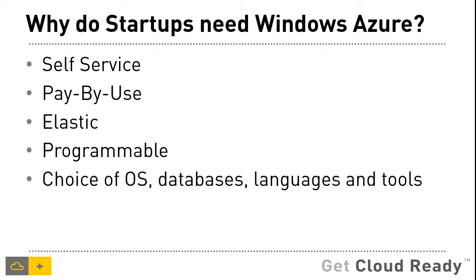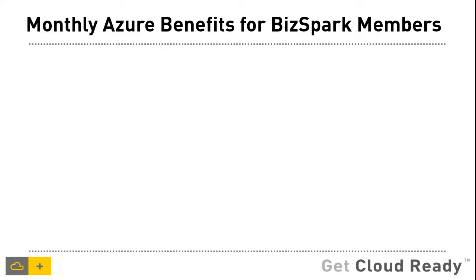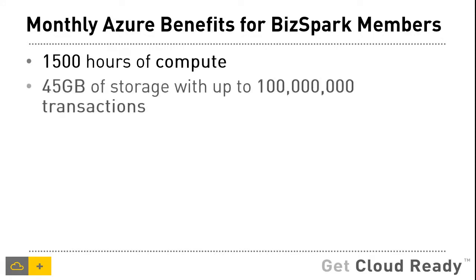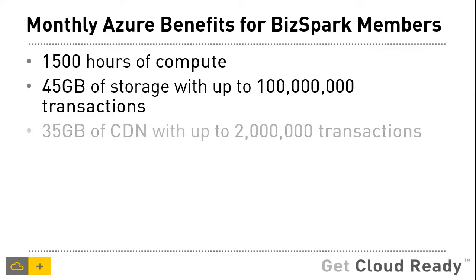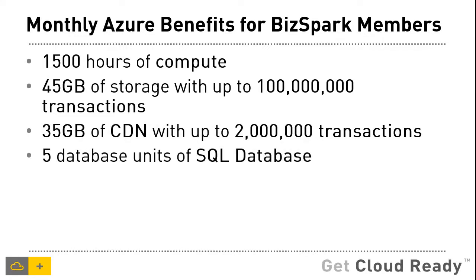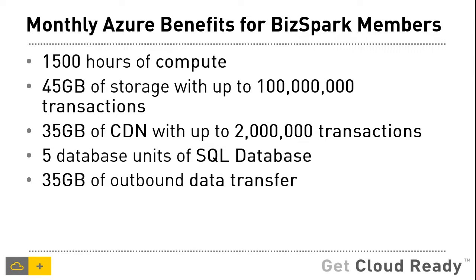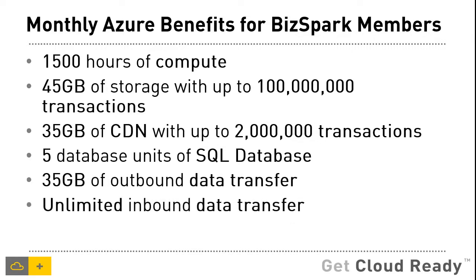Let's take a closer look at the monthly benefits that BizSpark brings for Windows Azure customers. First, there is 1,500 hours of compute, then 45 GB of storage, 35 GB of CDN, 5 database units of SQL database, 35 GB of outbound data transfer with unlimited inbound data transfer — which is free for inbound traffic — and 128 MB of cache.